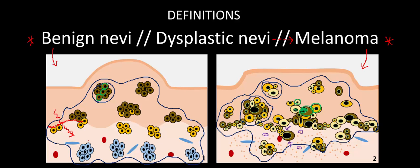So by that definition, you might be wondering: if we have invasion past the basement membrane of these melanocyte clusters, why are we still calling this benign nevus benign? The best way to understand this is to take a moment to talk about how we believe nevi originate and compare that to how we believe melanoma originates.